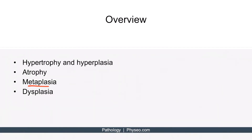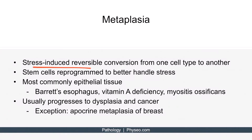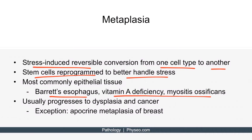Now let's talk about metaplasia. Metaplasia is a stress-induced reversible change in which one cell type — classically epithelial or mesenchymal — is replaced by another cell type. Metaplasia involves reprogramming of stem cells to produce new cells that can handle stress in a better way. Removal of a stressor may reverse metaplasia. Metaplasia most commonly involves change of one type of epithelium to another. For example, chronic irritation by cigarette smoke can cause the normal ciliated columnar epithelial cells of the trachea and bronchi to be replaced by stratified squamous epithelial cells. With persistent stress, metaplasia may progress to dysplasia and eventually cancer.